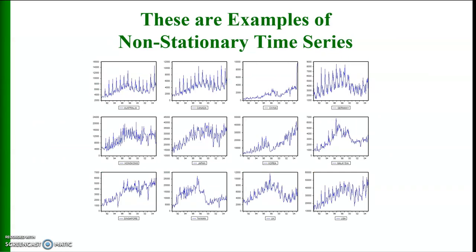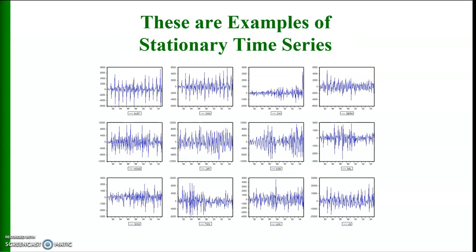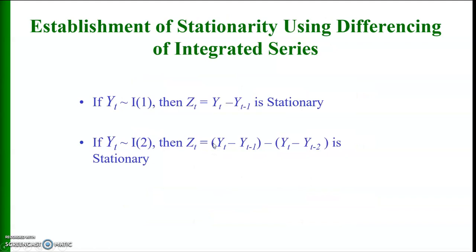These are some examples of non-stationary time series. If you look at these series, you can see some type of trends — they are not fluctuating around a zero mean or some fixed non-zero mean. Conversely, these are examples of stationary time series. In all of these series, the values fluctuate up and down around a zero mean. In these stationary series, the trend has been removed from the data.